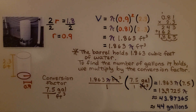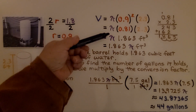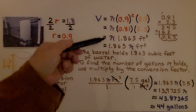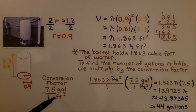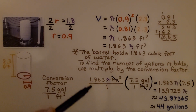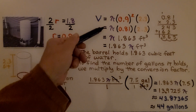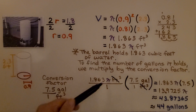So we found two different ways to solve it — one in terms of pi using equal signs and then multiplying by the conversion factor, and the other using 3.14 for pi.